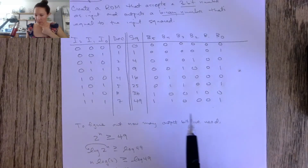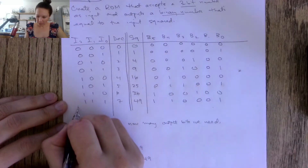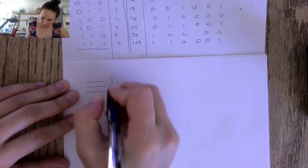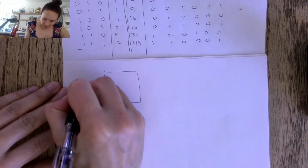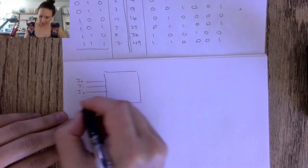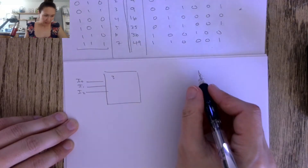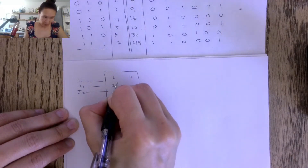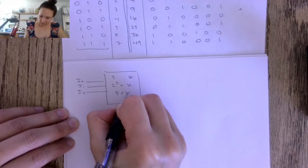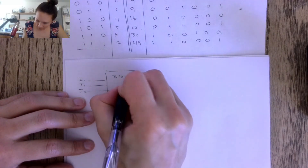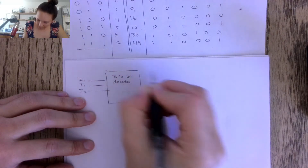Now we can put this into a ROM. We have three inputs — I2, I1, I0 — and six outputs. That means the first layer is a three-to-eight decoder, since 2^3 = 8. Then the second level will have a bank of OR gates for all eight cases, counting from 000 up to 111.